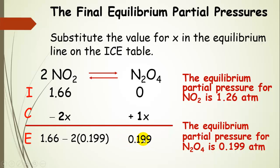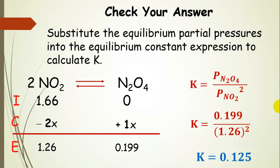Plugging x = 0.199 back into the equilibrium line of the ICE table: N₂O₄ = x = 0.199 atm, and NO₂ = 1.66 − 2(0.199) = 1.26 atm. We can check the answer by plugging these equilibrium partial pressures back into the Kp expression: 0.199 / (1.26)² gives back our original K value of 0.125, confirming our math is correct.